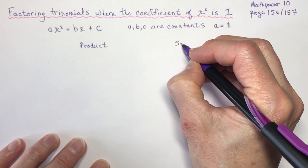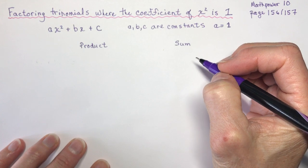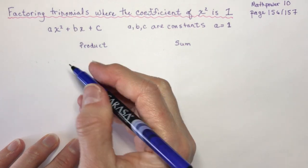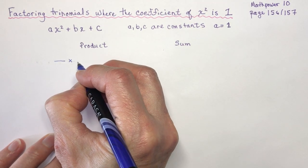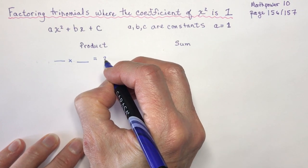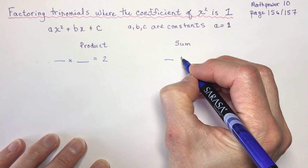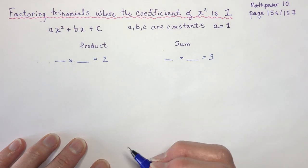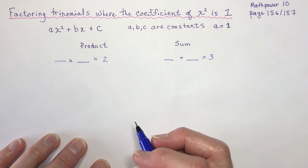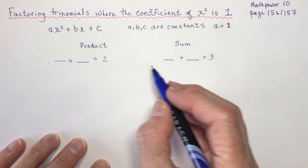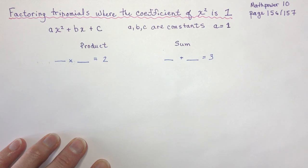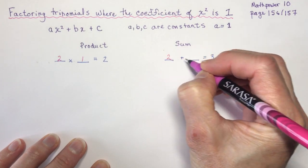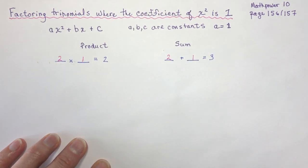I want you to stop the video and answer: what 2 numbers have a product of 2 and also add up to 3? You should know right away that would be 2 times 1 is 2 and 2 plus 1 is 3.